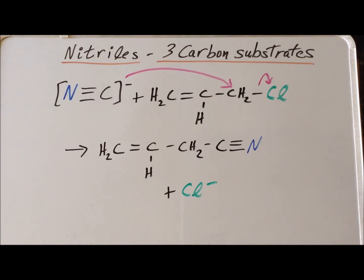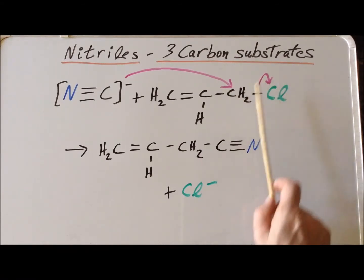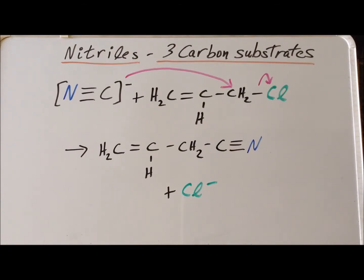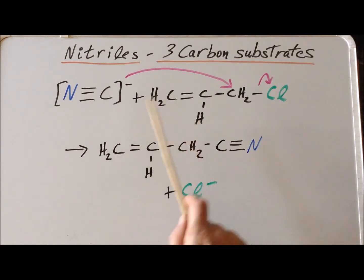The major organic product is 3-butenenitrile, and we are left with chloride from our leaving group. We could also have used bromine or iodine as effective leaving groups. We will show calculations in the case of fluoride for comparison, but recall that fluoride is a poor leaving group, as is cyanide itself. Please see the following computed structures for the reactants, the products, and the transition states for this SN2 reaction on the allylic substrate.